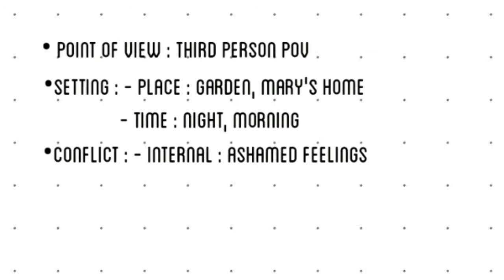Next is point of view. This short story uses the third person point of view. The next is setting. The first is setting of place: we have the garden and Mary's home. The second is setting of time: we have night and morning.